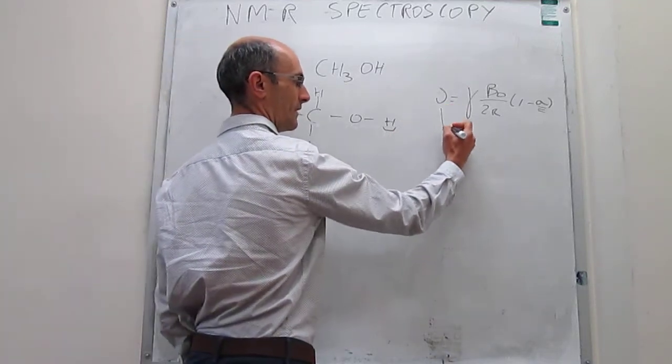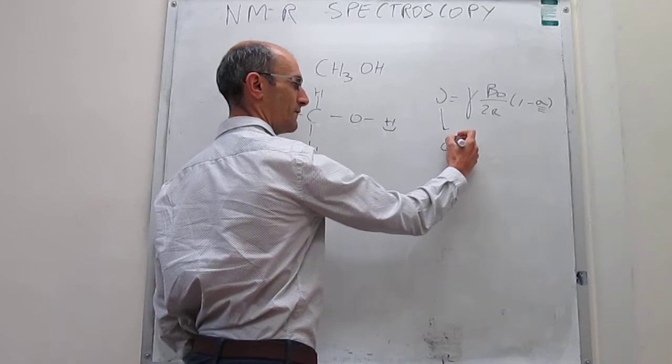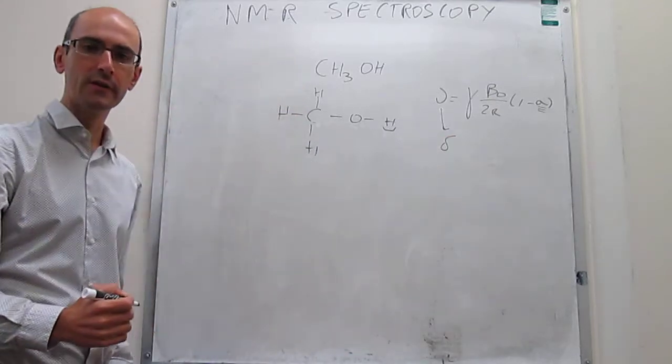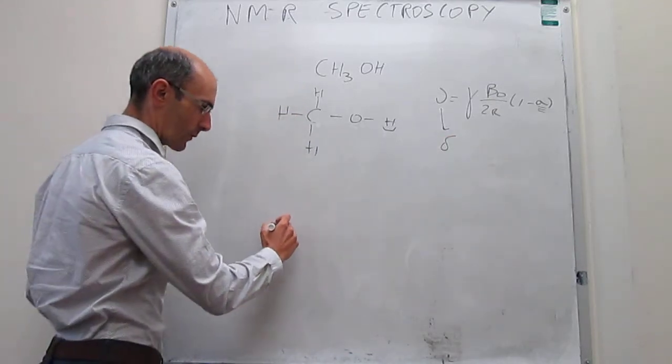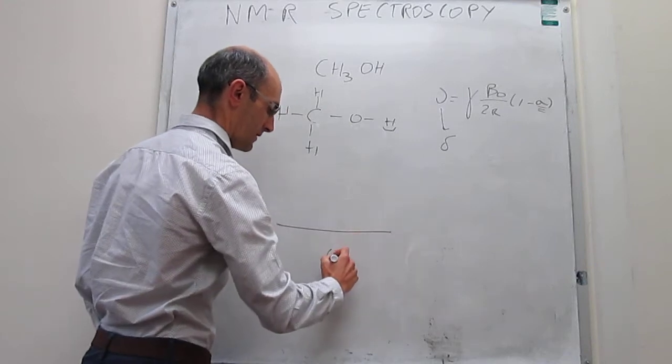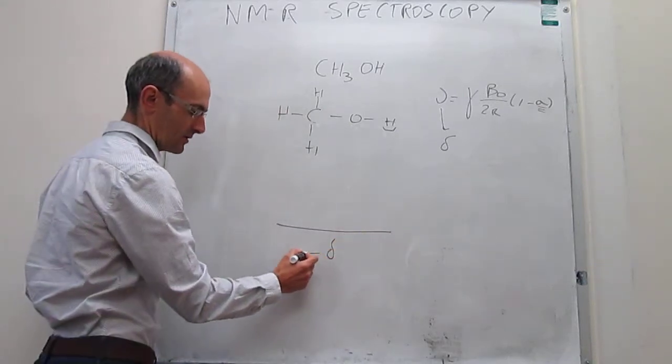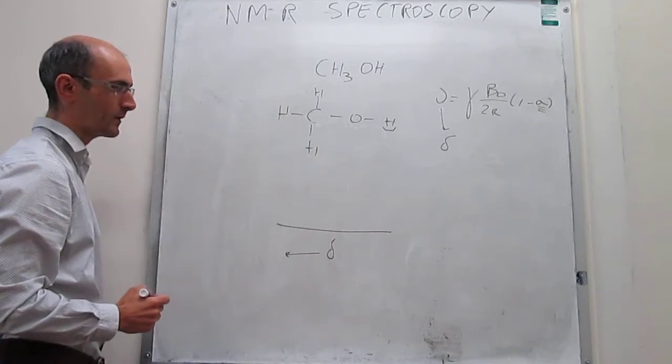We get these frequencies, we transform into chemical shifts as we have seen in a prior video, and then we're ready to plot here what the chemical shift spectrum should look like. Chemical shift usually grows to the left here.